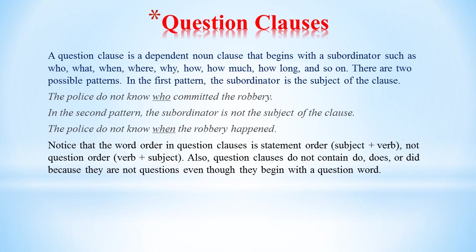Question clauses. A question clause is a dependent noun clause that begins with a subordinator such as who, what, when, where, why, how, how much, how long, and so on. There are two possible patterns. In the first pattern, the subordinator is the subject of the clause: 'The police do not know who committed the robbery.' In the second pattern, the subordinator is not the subject: 'The police do not know when the robbery happened.' Notice that the word order in question clauses is statement order (subject + verb), not question order (verb + subject).